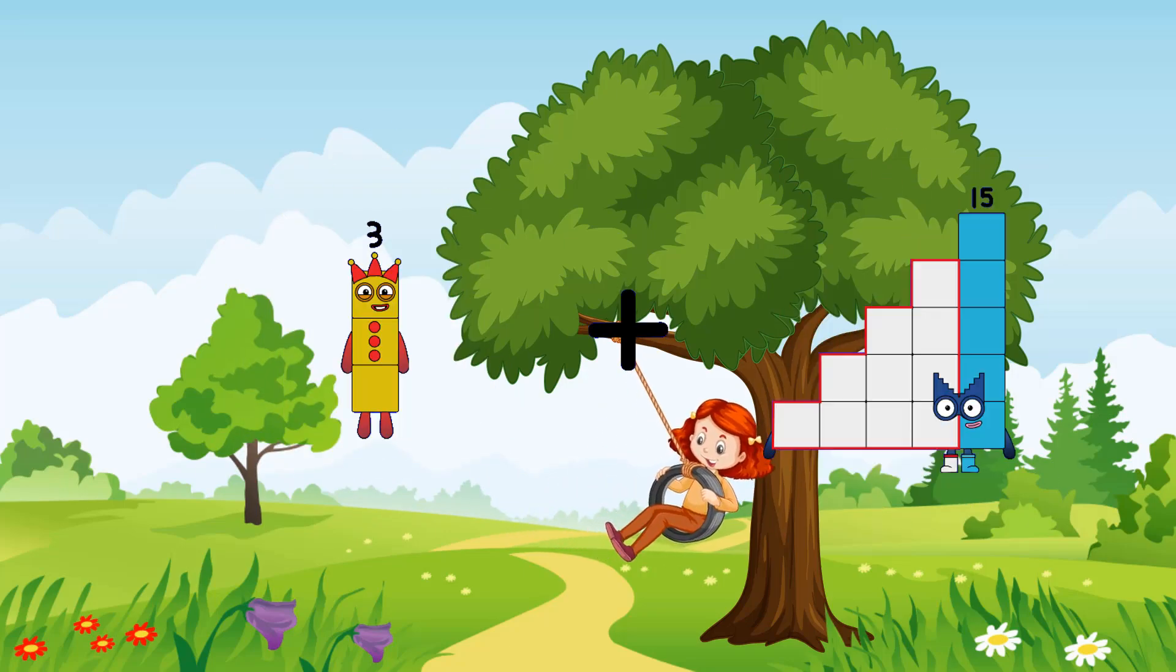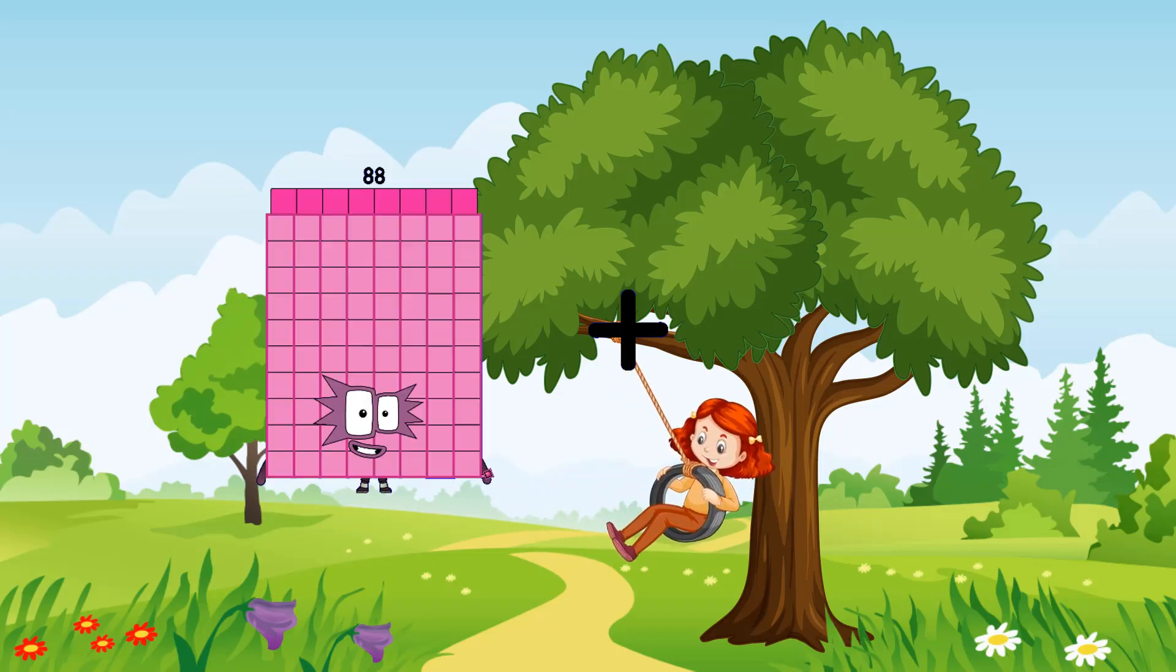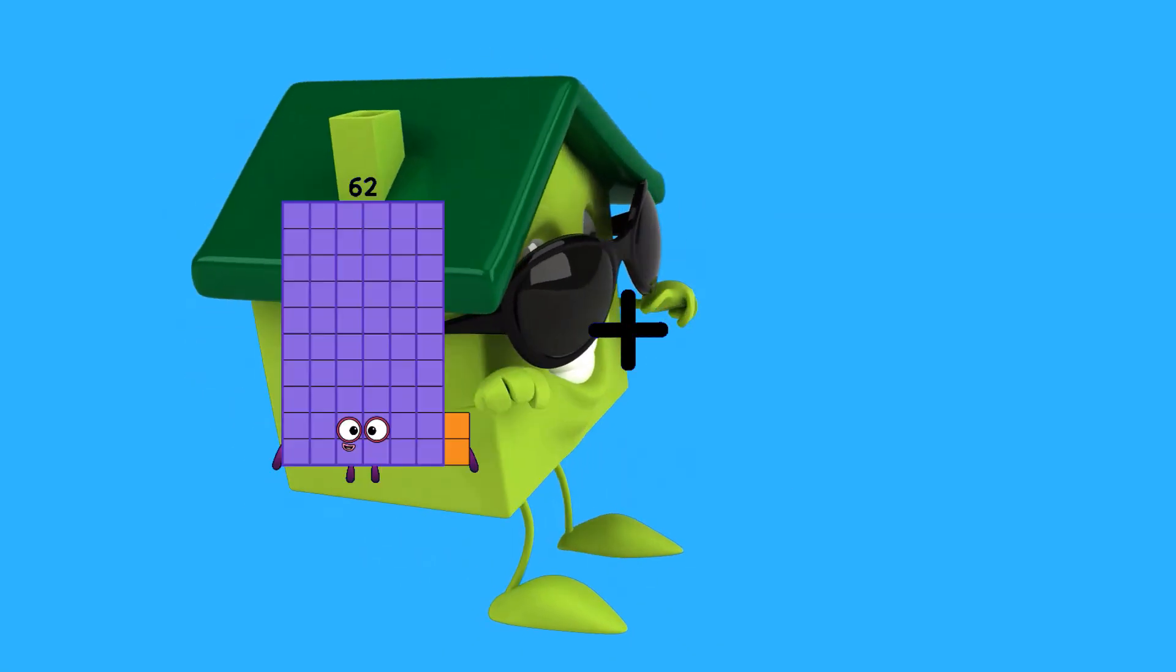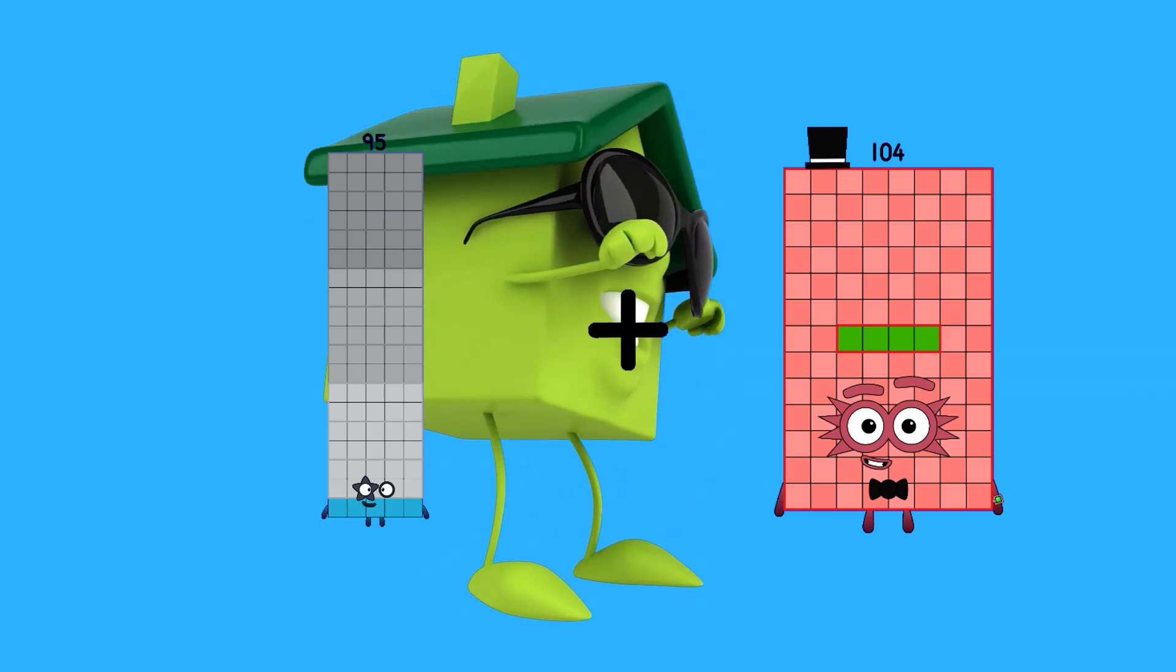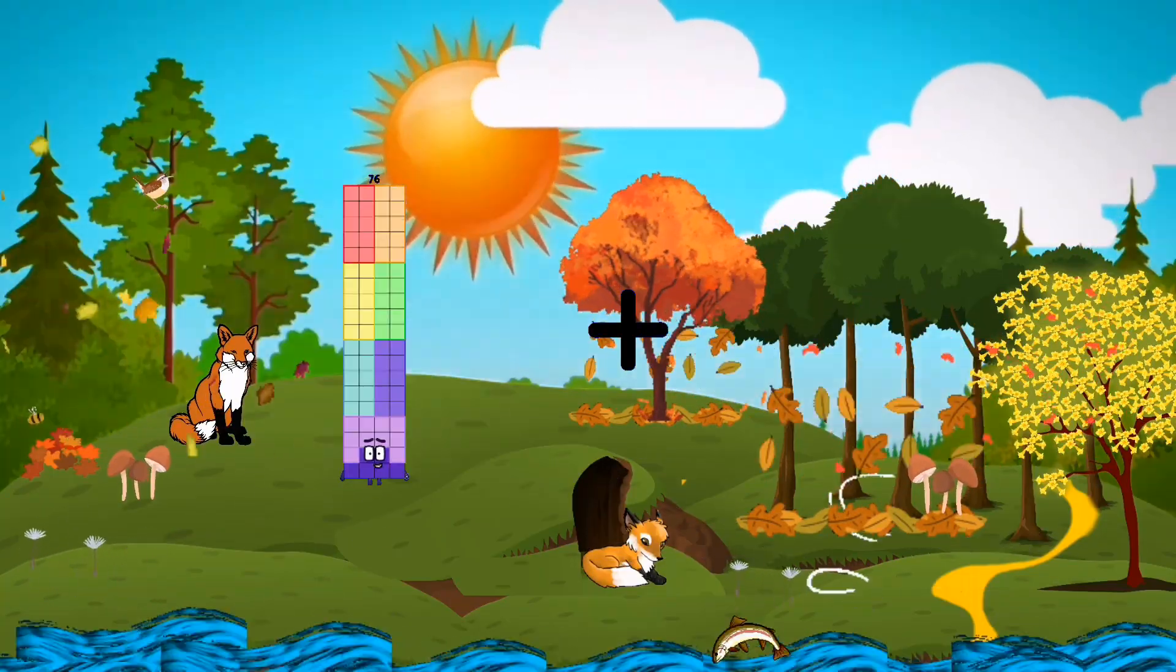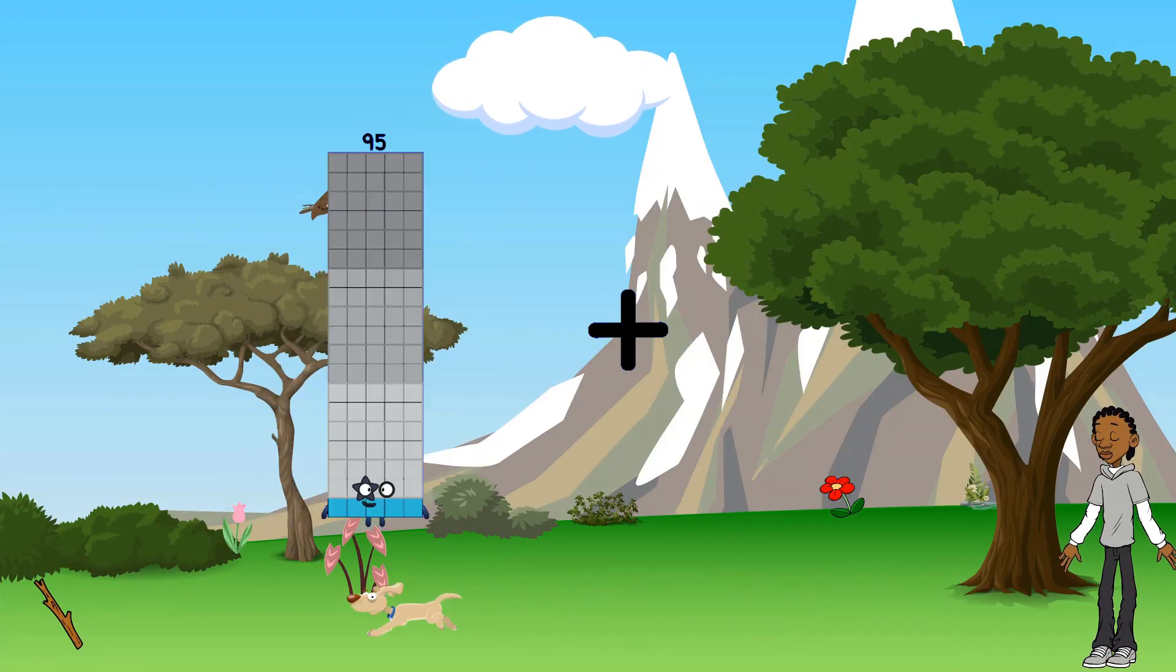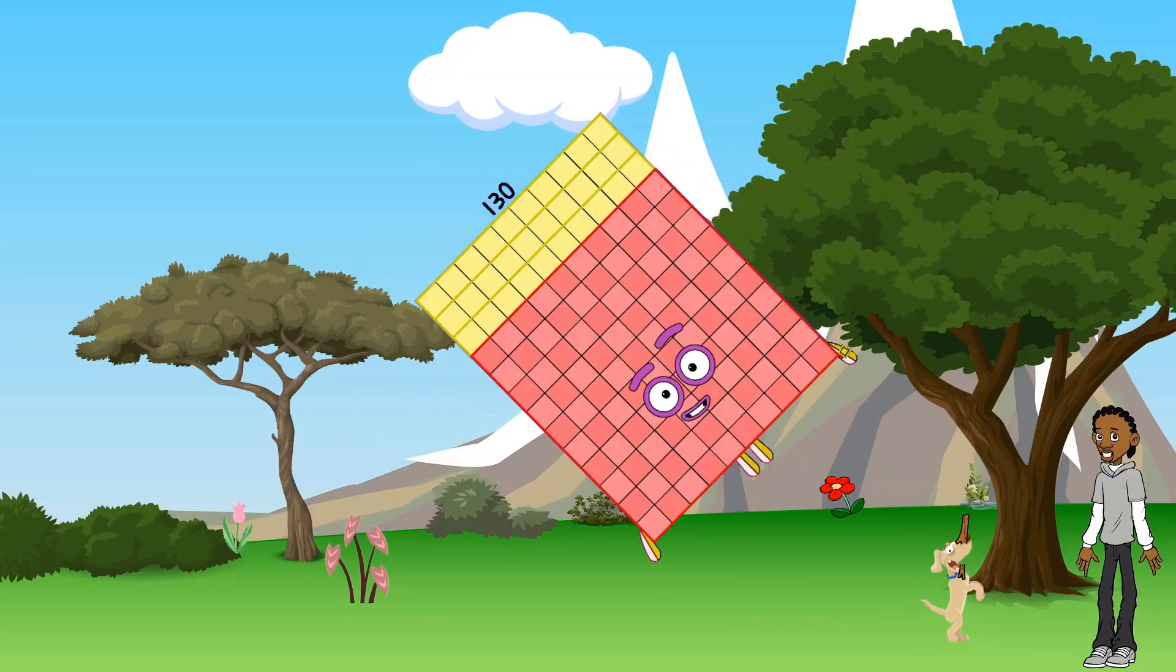3 plus 46 equals 49. 37 plus 77 equals 114. 95 plus 104 equals 199. 76 plus 17 equals 93. 48 plus 82 equals 130.